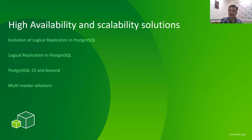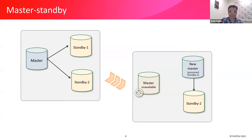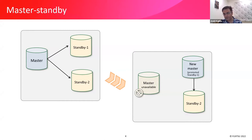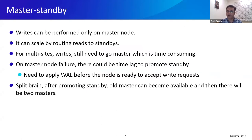Let's start with high availability and scalability solutions. This is the most basic solution for high availability where there is a master and multiple standby nodes. Here we perform physical replication. If the master node goes down, one of the standbys can be promoted to make a new master and the other standbys follow it. Writes can only be performed on the master node, and we can only scale by routing reads to the standbys.